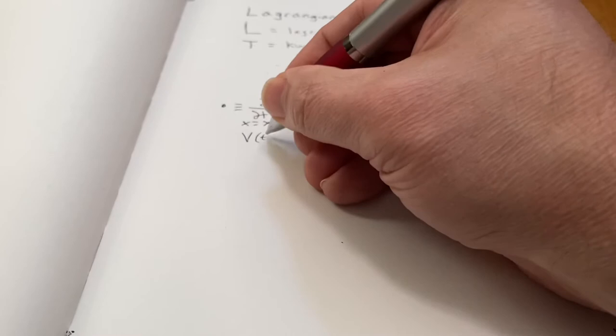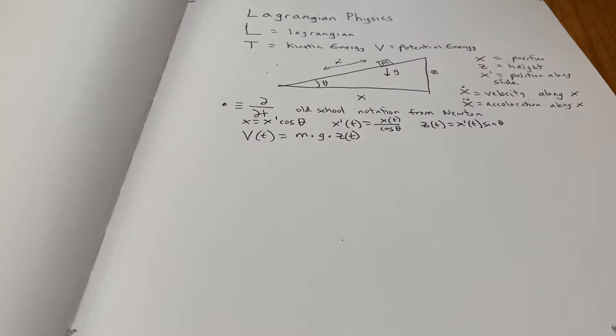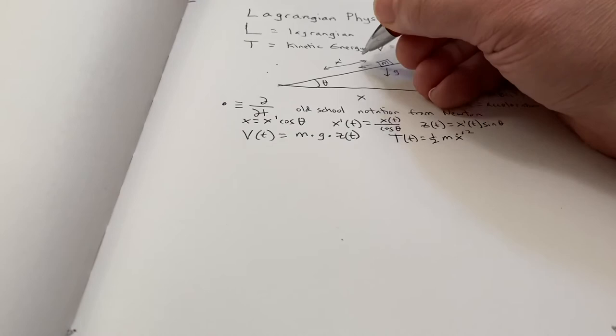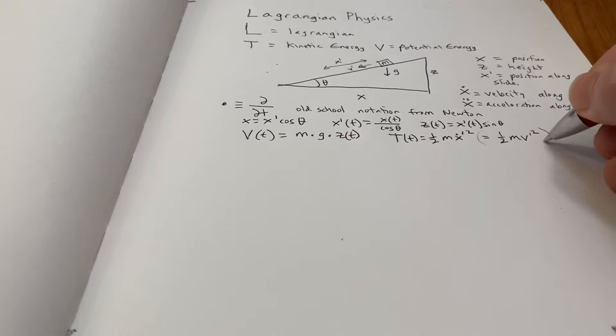Now the potential is just the potential from gravity. And kinetic is just kinetic energy, one-half mv squared. And since all the velocity is along this inclined plane, because it's sliding there, I can just do it in terms of X prime dot.